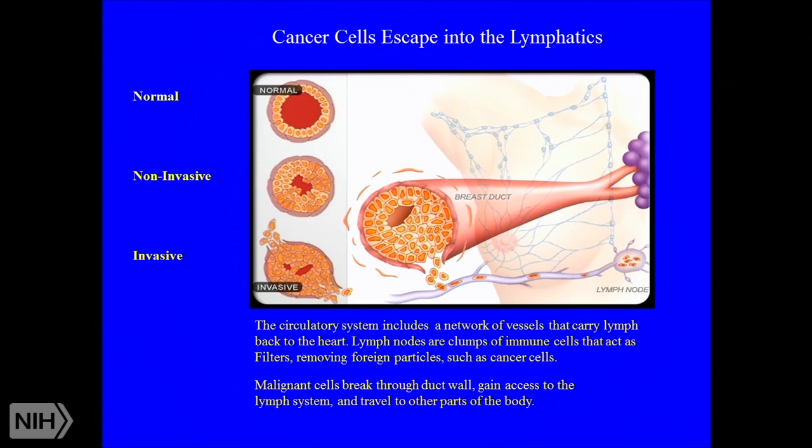When breast cancer becomes invasive, it breaks through the walls of the duct or lobule where it began, moves into the surrounding stromal tissue, and then gains access to the lymphatic system, from which it can travel to distant parts of the body.